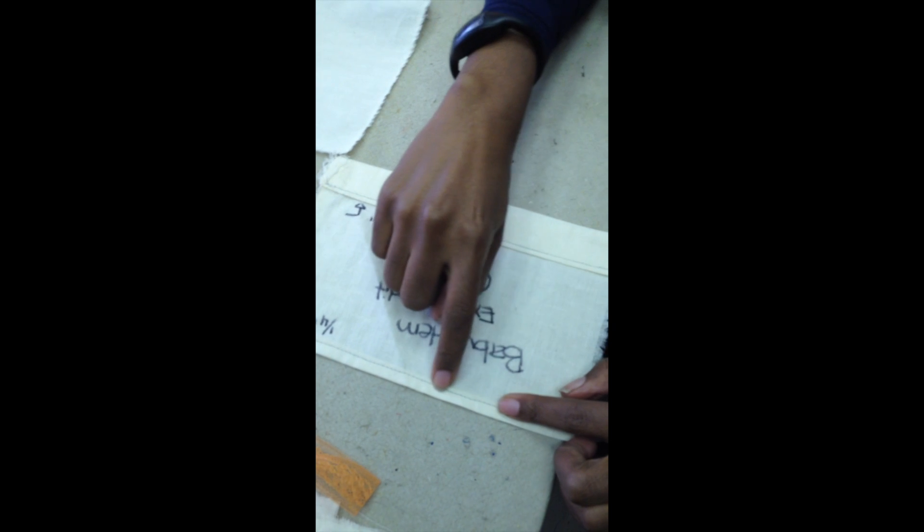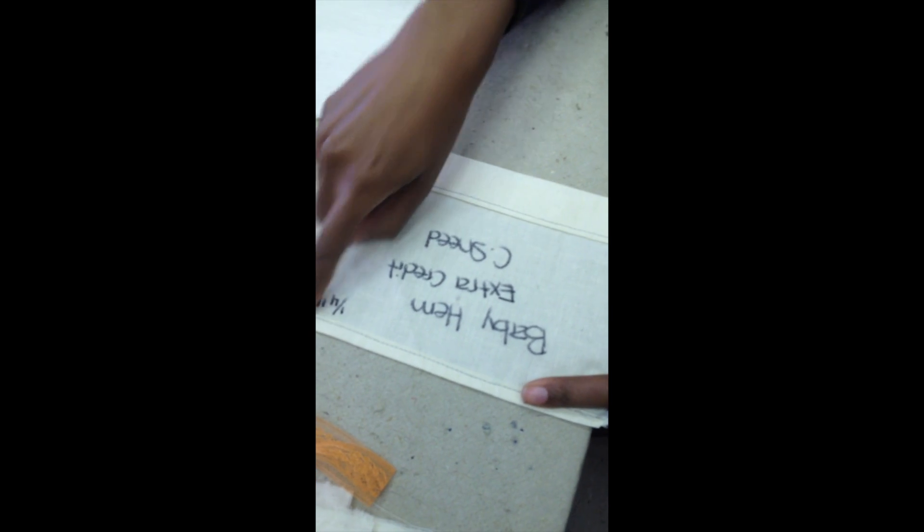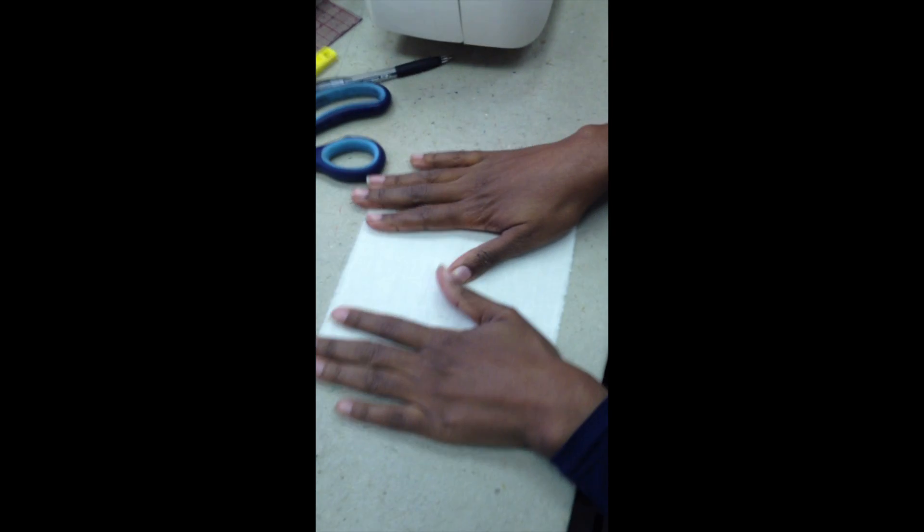This one's a quarter inch, this one is about one inch. You can do whatever size you want. If you do two, it's extra credit. If you do one with two lines in it, I don't have it right now but I will demonstrate it - that's extra credit as well. So the way the baby hem works is really simple.